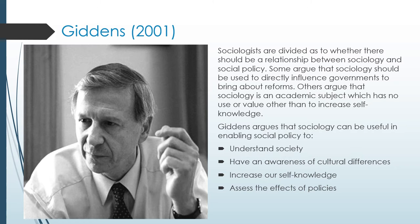Giddens said that sociologists are divided as to whether there should be a relationship between sociology and policy. Some argue sociology should directly influence governments and bring about reform; others say sociology is an academic subject with no value in policy. Giddens argues that sociology can be useful in enabling social policy in a number of ways — understanding society, having an awareness of cultural differences, and increasing self-knowledge and awareness of issues.